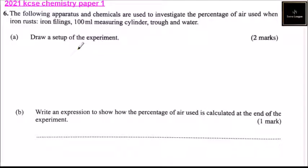Question number six. The following apparatus and chemicals are used to investigate the percentage of air used when iron rusts: iron filings, 100 ml measuring cylinder, trough and water.